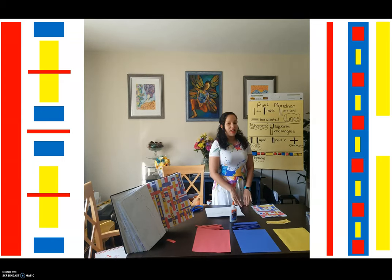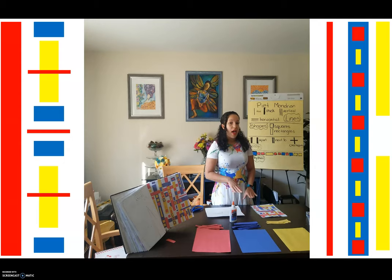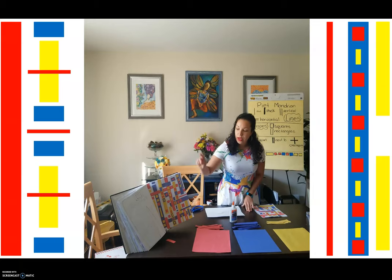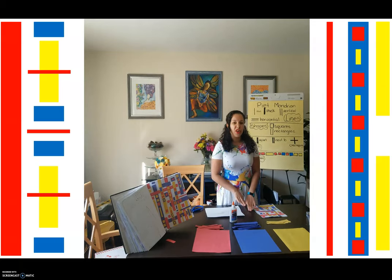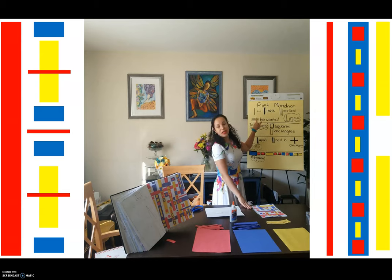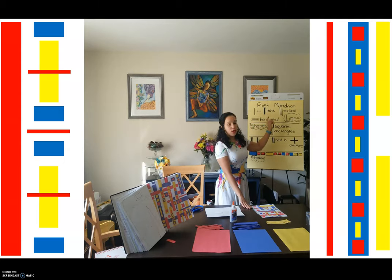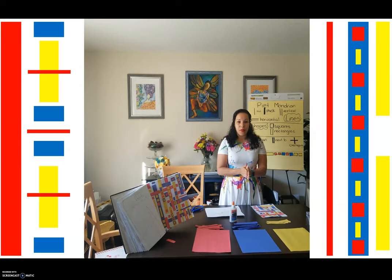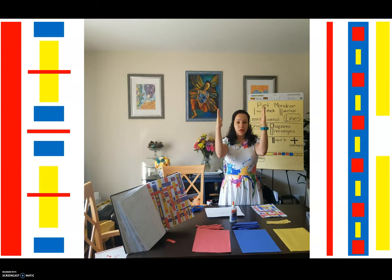We're looking at the artist Piet Mondrian. He's a Dutch painter and he created Broadway Boogie Woogie. We're going to make our own Broadway Boogie Woogie inspired artwork, but we need to learn a couple of things about how he created his picture. He used thin lines and thick lines, and some vertical lines — vertical lines are lines that go straight up and down.